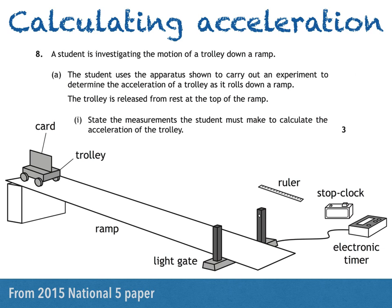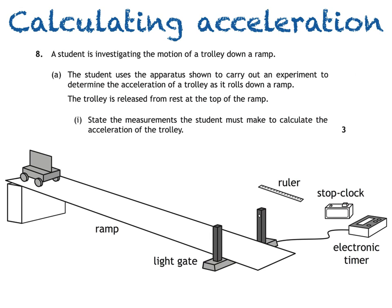So the first thing we should really do is to visualize what's going to happen. The trolley accelerates down the ramp and at the bottom, the card attached to the trolley passes through the light gate. The time taken for the card to pass through the light gate will be displayed in the electronic timer. The diagram also shows a ruler and a stop clock.